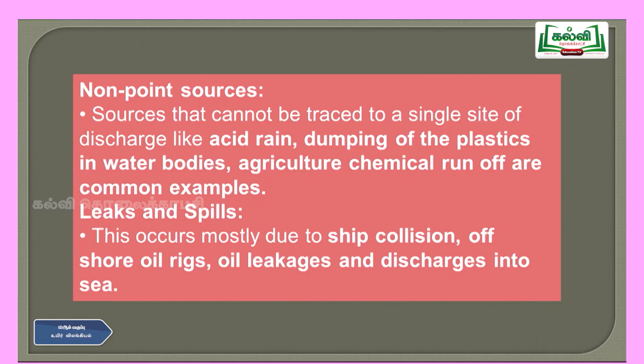Leaks and spills occur mostly due to ship collisions, offshore oil rigs, and oil leakages and discharges into the sea. This type of water pollution happens mainly in oceans or seas where oil extraction plants operate. When there is a leakage during oil rigging — extraction of crude oil — it mixes into nearby water bodies. This is called leaks and spills.